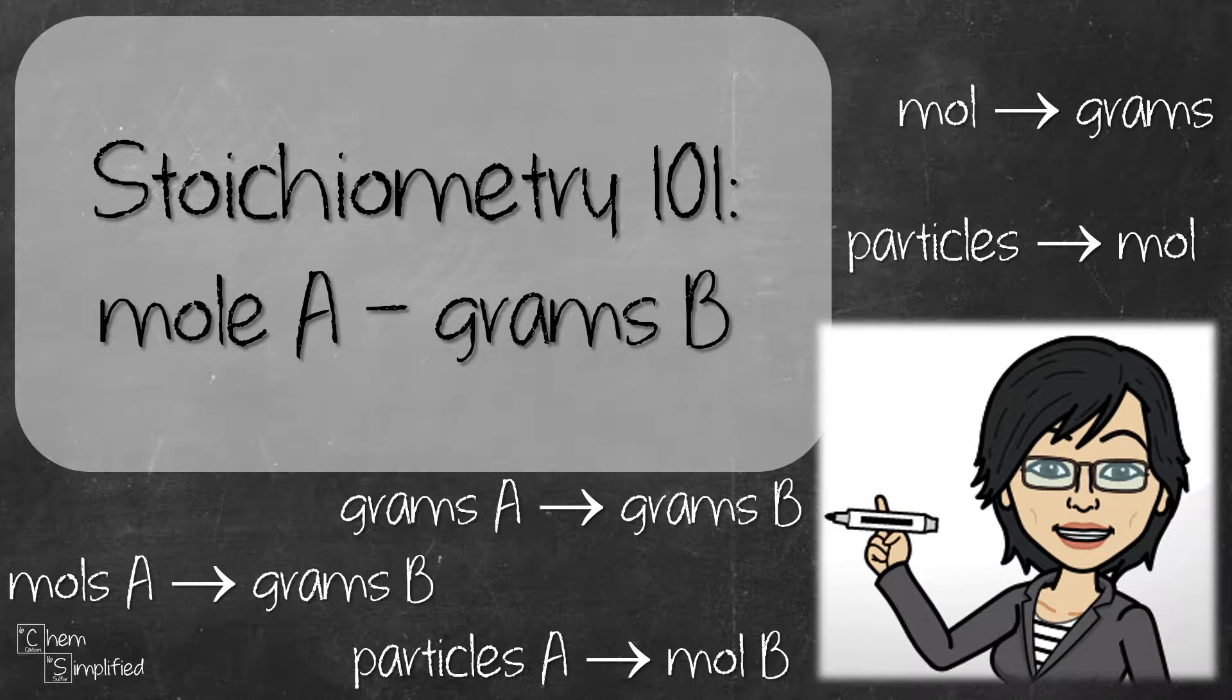This is part 6 of the Stoichiometry 101 series. In this video, we're going to look at finding grams B when given mole A.